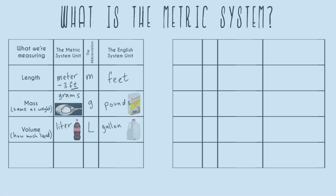Next is time, which is the same for both systems. The base unit is seconds, abbreviated as a lowercase s. Just keep in mind that there's no conceptual difference between grams and pounds, or liters and gallons — it's just the word used and how big that individual unit is. If you understand what a pound is, you understand what a gram is. If you understand what a foot is, you understand what a meter is.